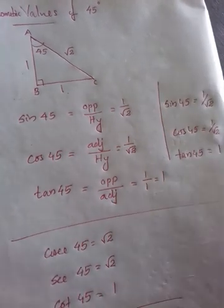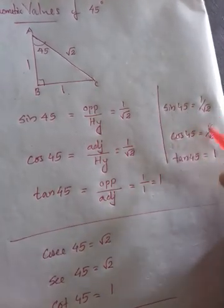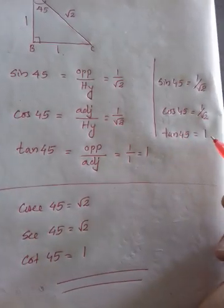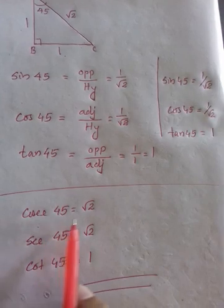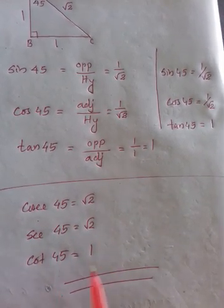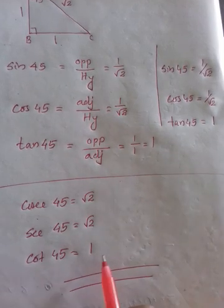With today's study, the values are: sin 45 is 1 by root 2, cos 45 is 1 by root 2, tan 45 is 1, cosec 45 is root 2, sec 45 is root 2, and cot 45 is 1.